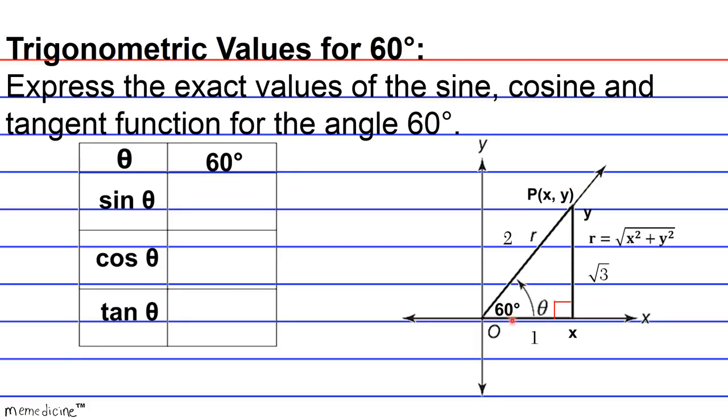So for a triangle of this type with a 90 degree angle and 60 degree angle, the adjacent, opposite, and hypotenuse will always have a ratio of 1 to radical 3 to 2. So let's go ahead and now use this ratio to fill in the blanks of the exact values of our sine, cosine, and tangent functions.